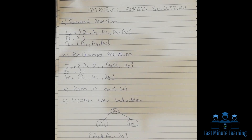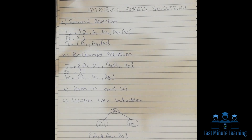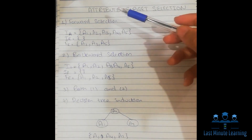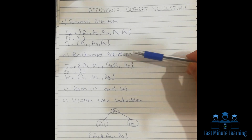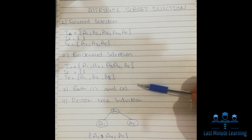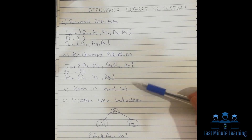Hi guys, welcome to Last Minute Learning. Today the topic we are going to study is attribute subset selection. There are four steps we are going to study: first is forward selection, second is backward selection, third is both combined, and the fourth is decision tree induction.